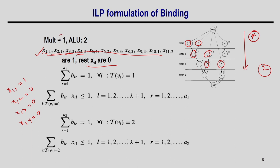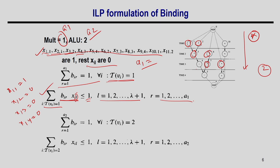Assuming multiplier is type 1 with limit A1, for all type-1 operations the unique-binding constraint requires their sum over resources to equal 1. For each timestamp and each multiplier instance, the number of operations executing must be ≤ 1 — this is the conflict constraint. A similar set of constraints applies for ALU (type 2).